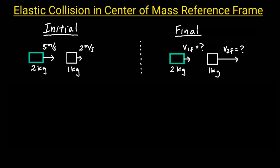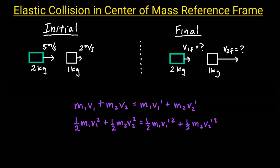Since momentum and kinetic energy are conserved in an elastic collision, the straightforward method is to use these equations. However, the algebra is very tedious and it's very easy to make a mistake. Instead, we'll be using the center of mass reference frame to solve our problem.